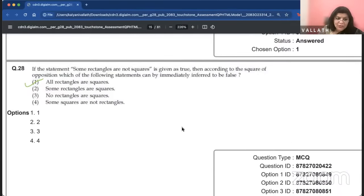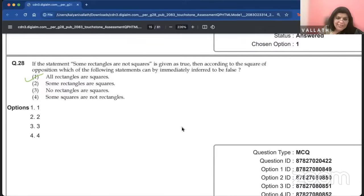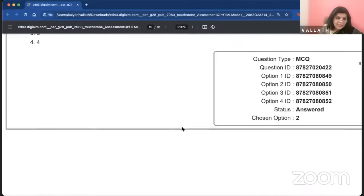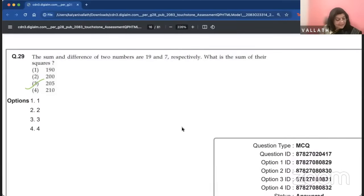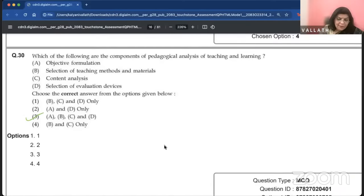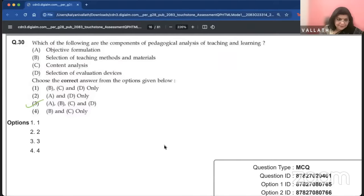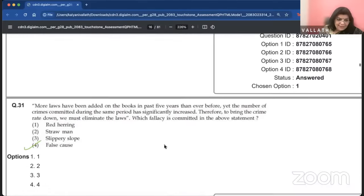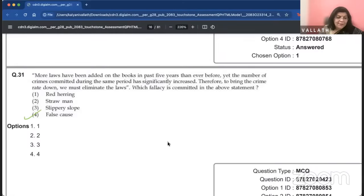Which among the following is an open source software for data analysis? That is a knowledge-based question. If you know it, it is easy. You R. If the statement, some rectangles are not squares is given as true, then according to the square of opposition, which of the following can be immediately inferred to be false? All rectangles are squares. That is the answer. The sum and difference of two numbers are 19 and 7, respectively. What is the sum of their squares? It is option C, 205.